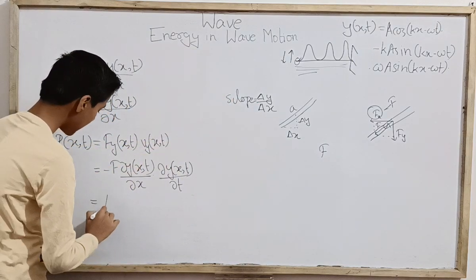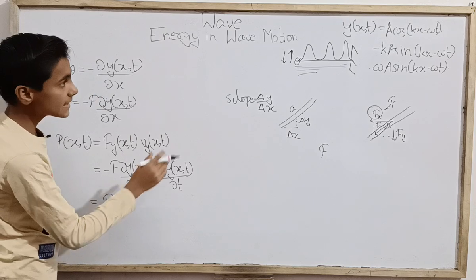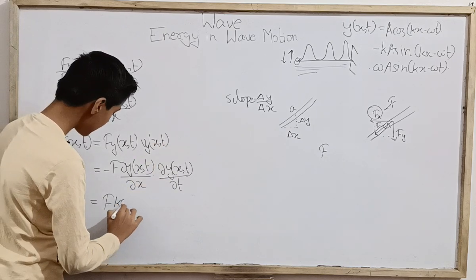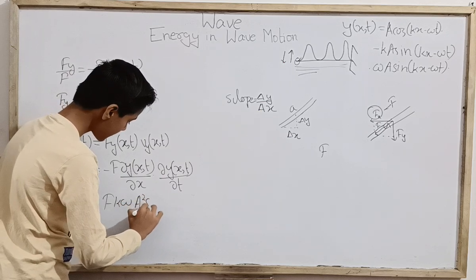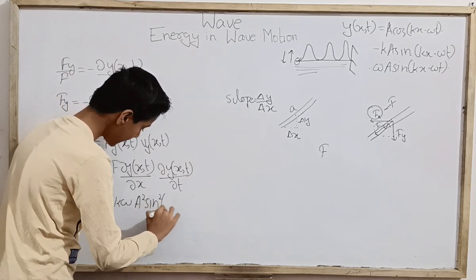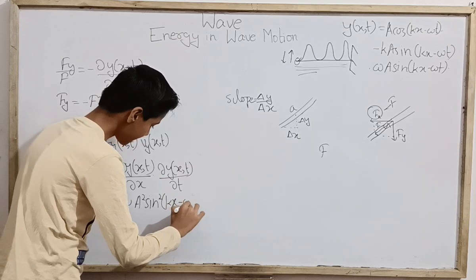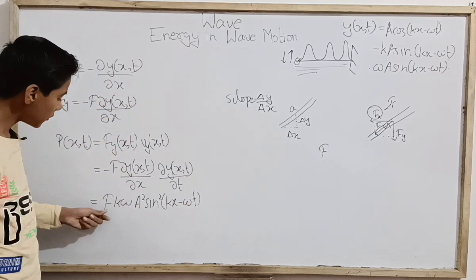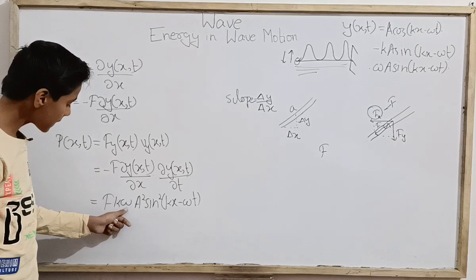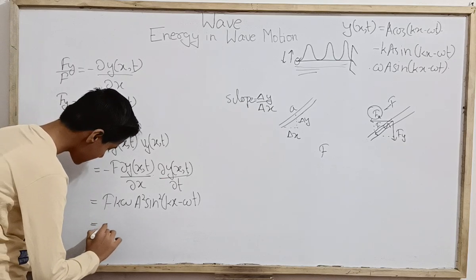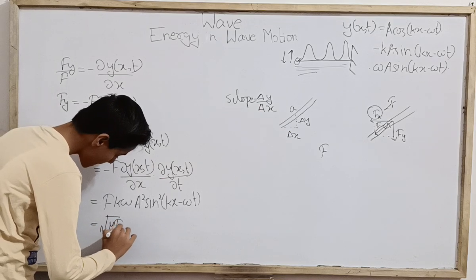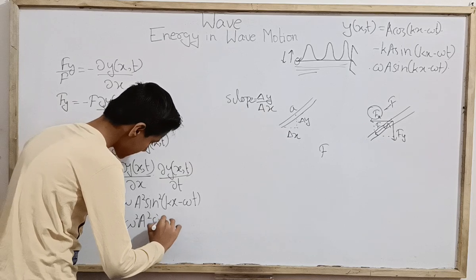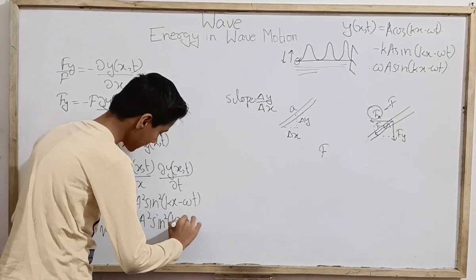So putting it together, minus times minus gives a positive result. The power becomes F times k times ω times A squared times sin²(kx − ωt). We can further write Fkω as the square root of μF times ω², using the previous formulas we have already gone through.